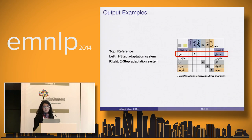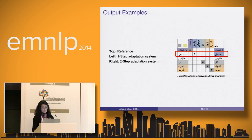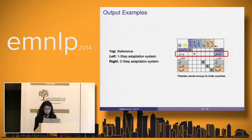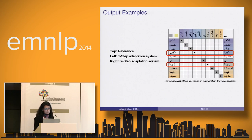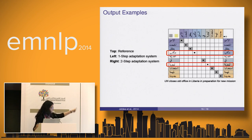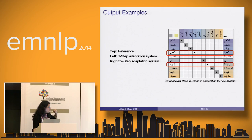Here is an output example. For translating 'Pakistan sent same voice to Arab countries,' the reference is shown at the top, the one-step adaptation result is on the left, and the two-step adaptation result is on the right. Using the two-step approach, we could correct certain forms — for instance improving the verb form toward the Egyptian reference. The spelling differences between the two systems are both technically correct, but the two-step result is closer to the reference.